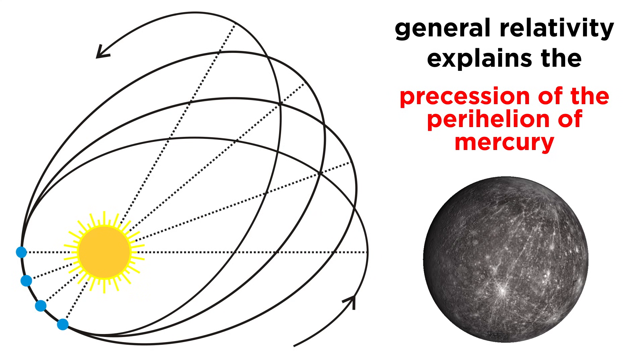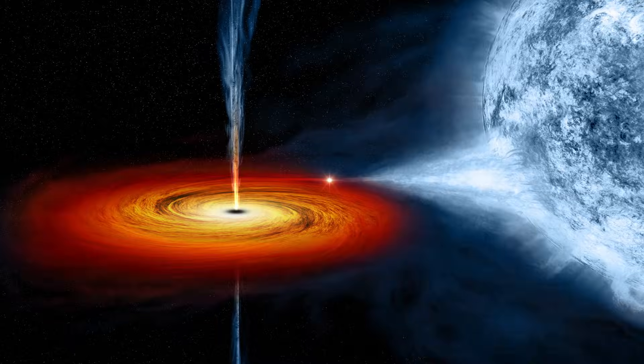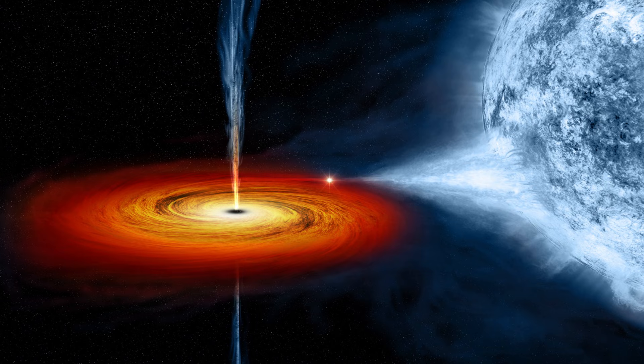General relativity predicts and explains all kinds of other observable phenomena, like anomalies in the orbit of the planet Mercury, and things like neutron stars and black holes, which we will cover in the astronomy course.